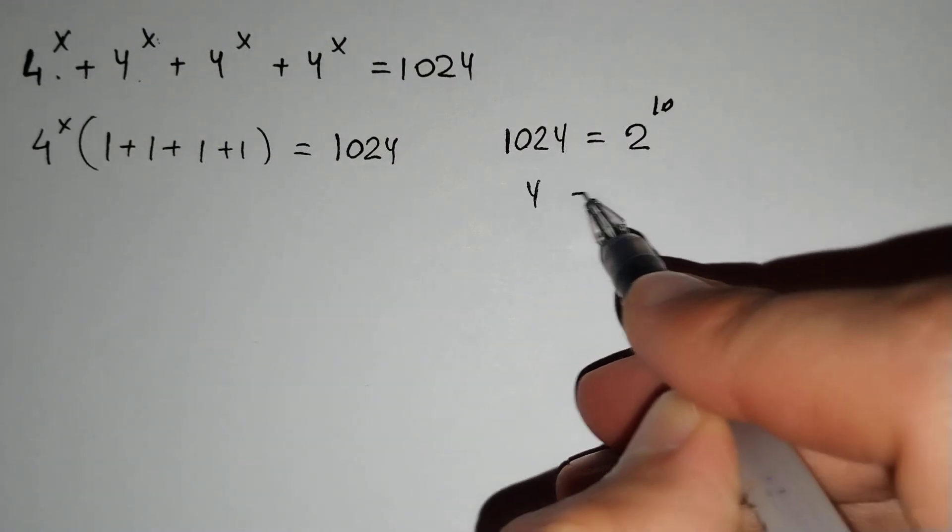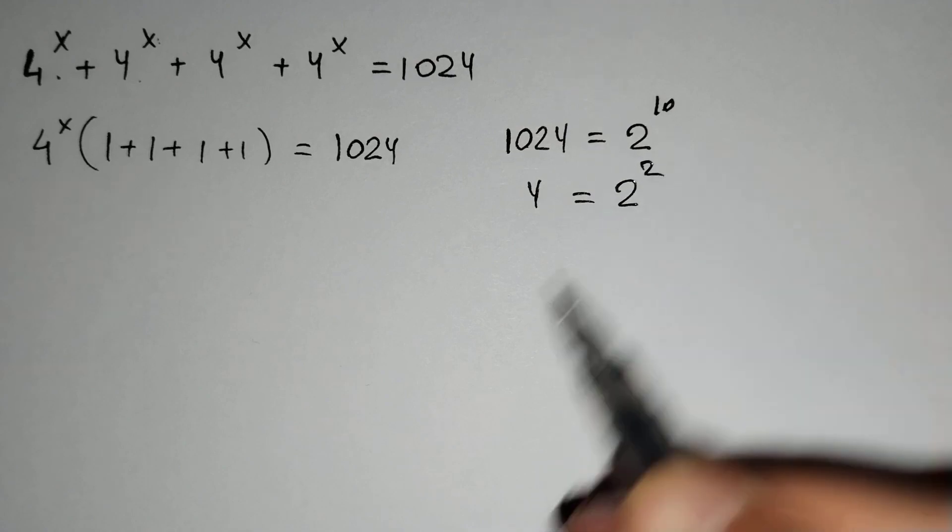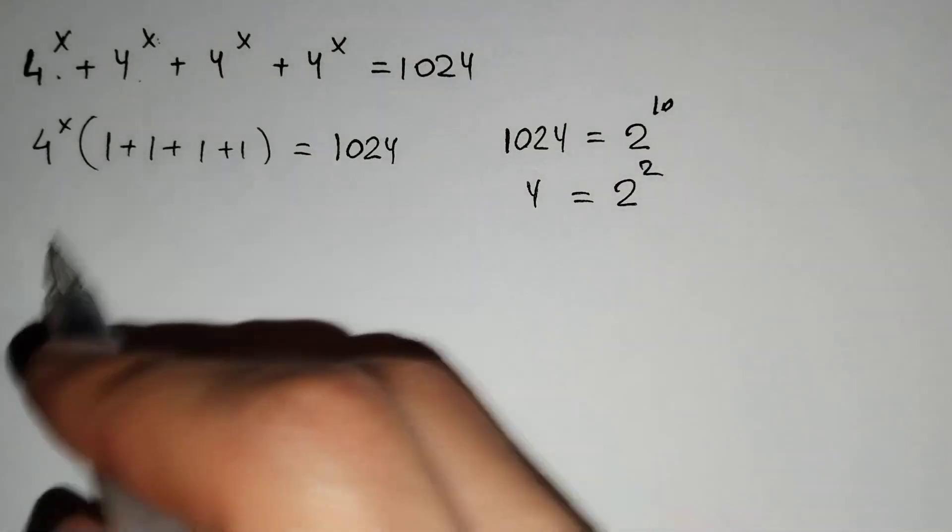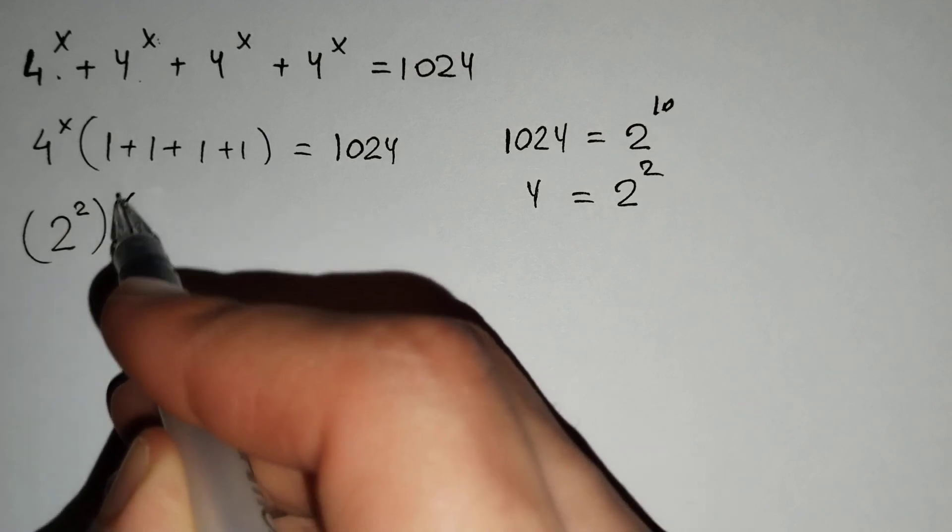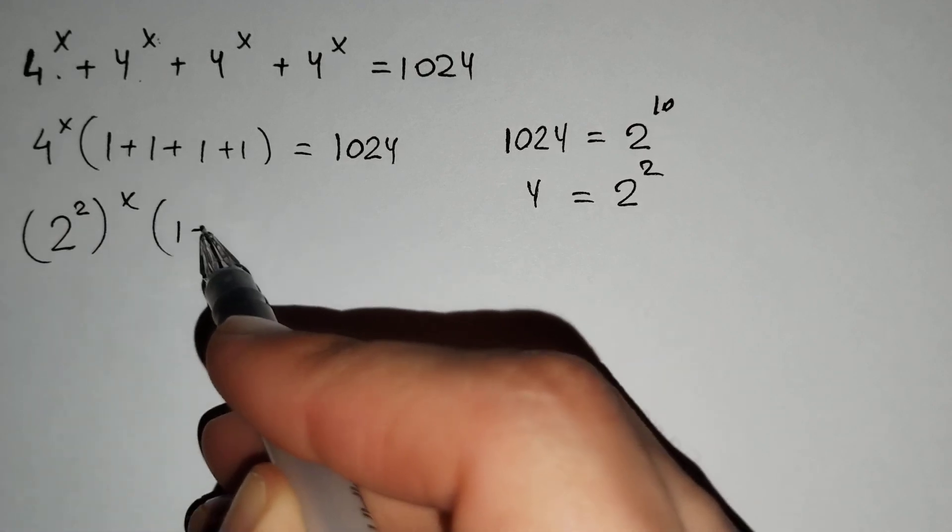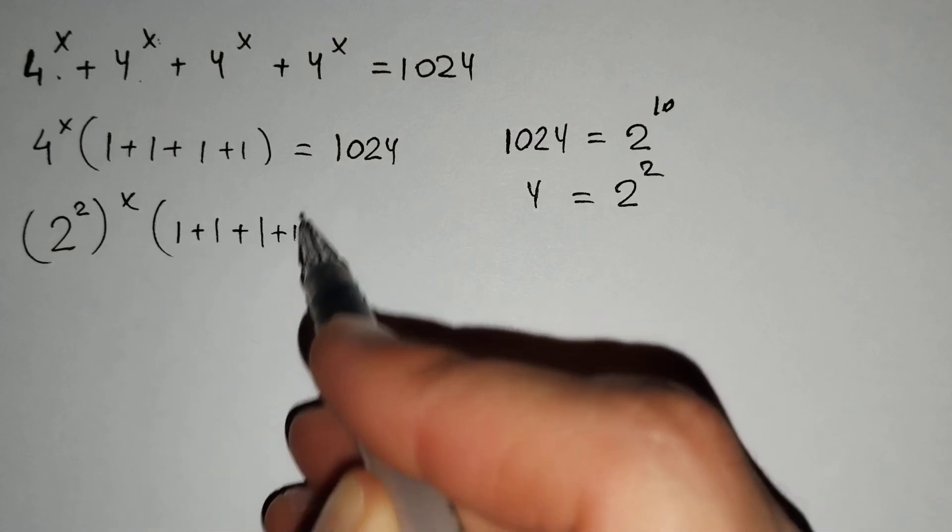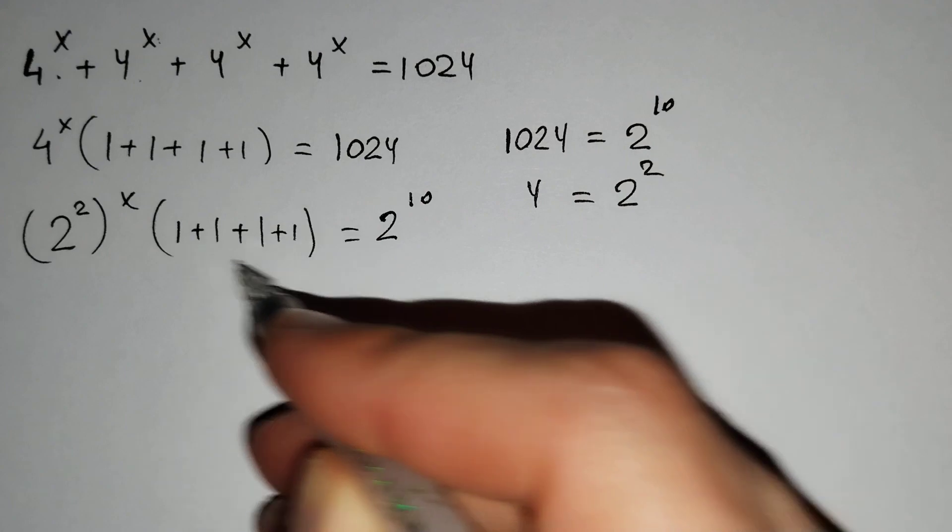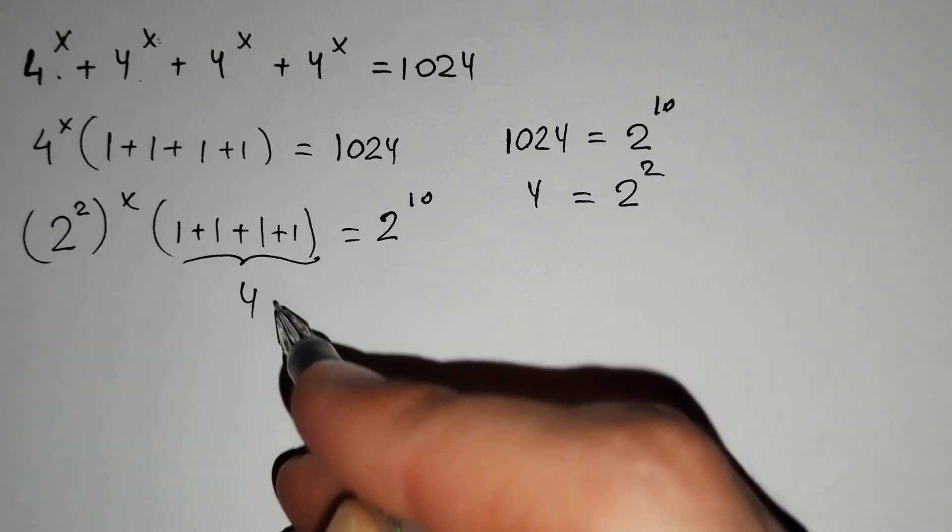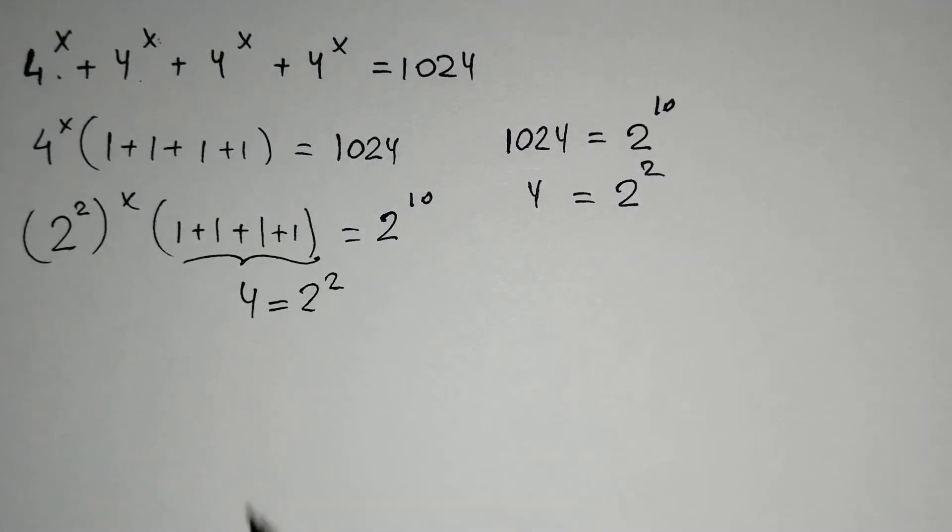4 equals 2^2, and this is equal to (2^2)^x times (1 + 1 + 1 + 1) equals 2^10. This is equal to 4, which is 2^2.